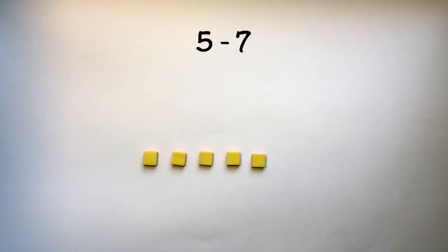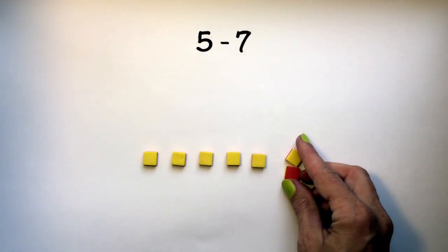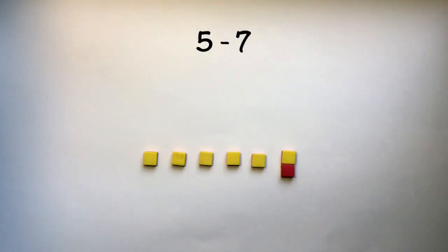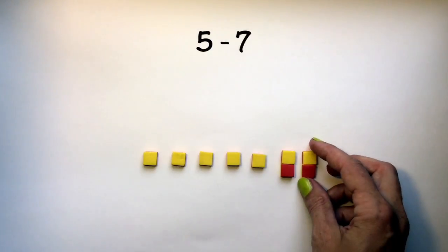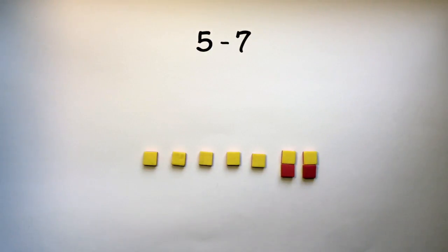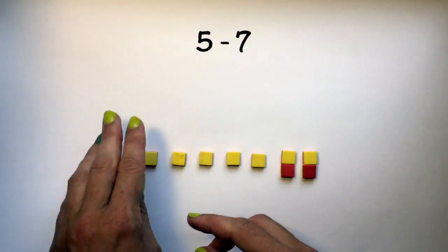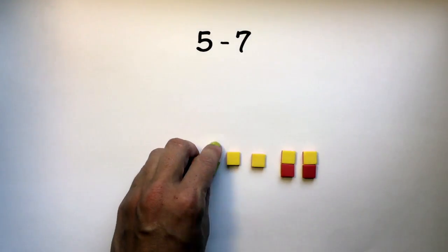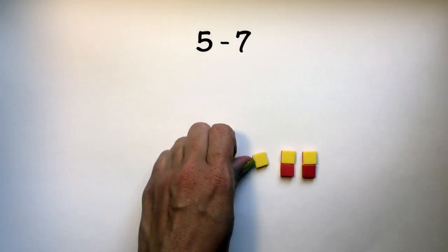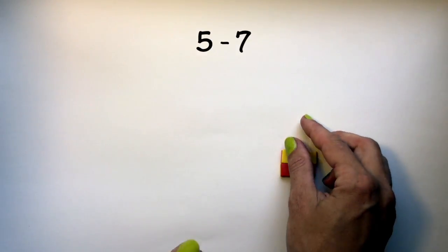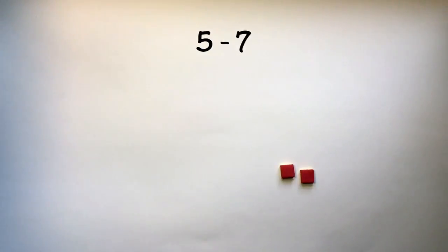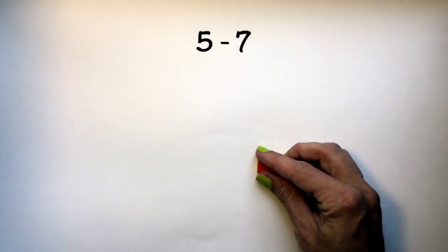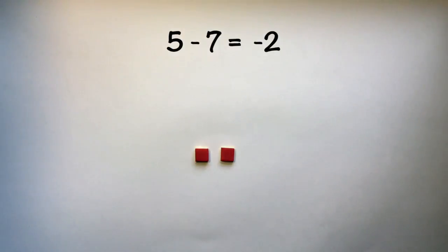The only way of adding tiles in is by adding pairs that are equal to zero. So if we add in two zero pairs, then we have enough positive tiles in order to be able to take away positive 7. I can remove 5, 6, 7 positive tiles and I'm left with negative 2.